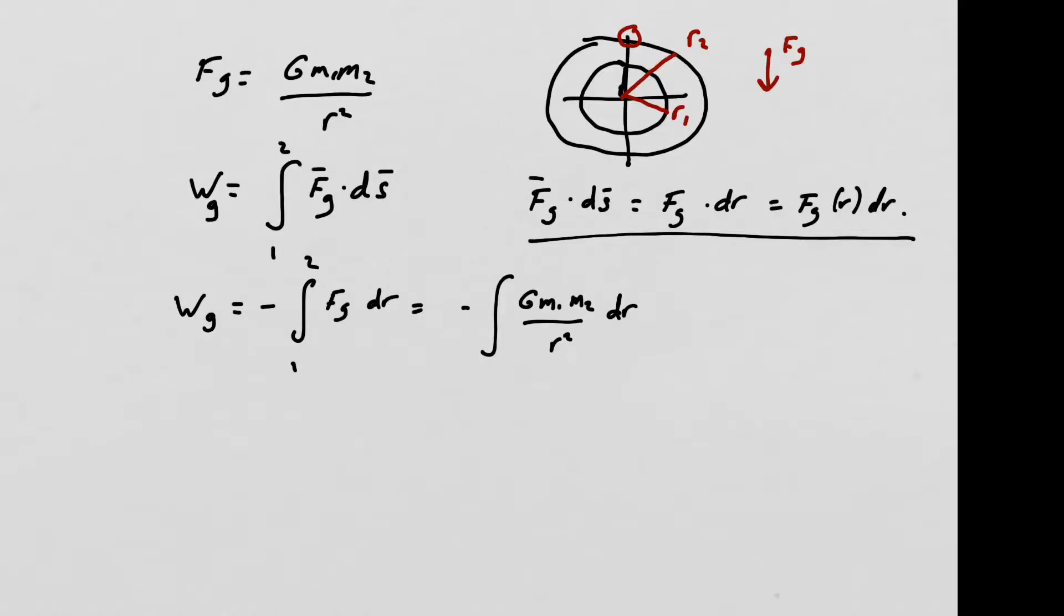Now, unless some sort of cataclysmic event happens, the mass of object 1 and the mass of object 2 don't change. We know capital G is Newton's universal constant. So, all of those come outside of the integral, and we're left with the integral of dr over r squared, where, again, we're doing this from radius 1 to radius 2.